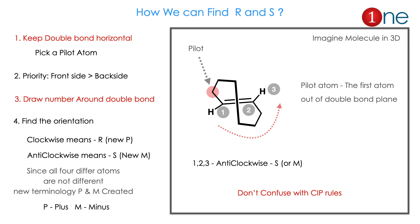To find R and S configuration: first, keep the double bond horizontal. Then pick the pilot atom. Give priority from front side to back side — the front side gets higher priority. Draw numbers around the double bond. Clockwise orientation means R, and the new name is P. Anti-clockwise means S, and the new name is M. Since all four atoms are not necessarily different, we use P and M configuration here instead of traditional R and S.